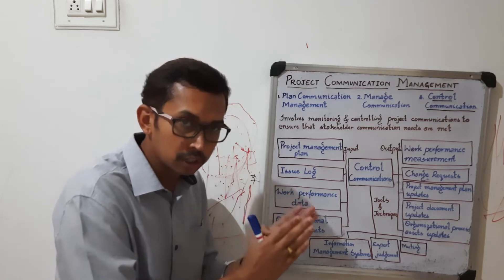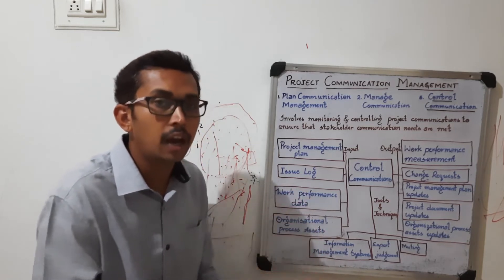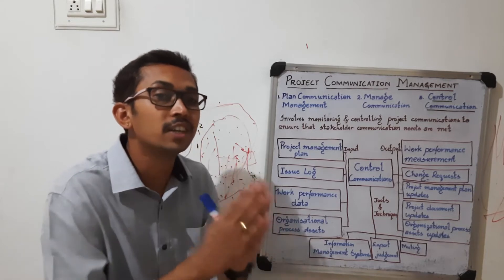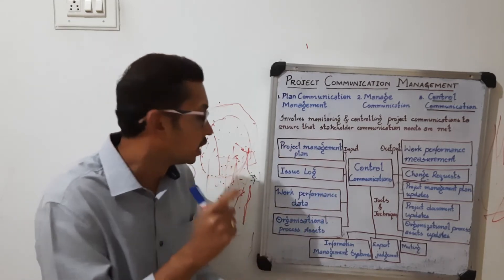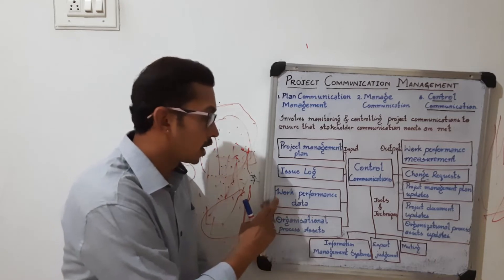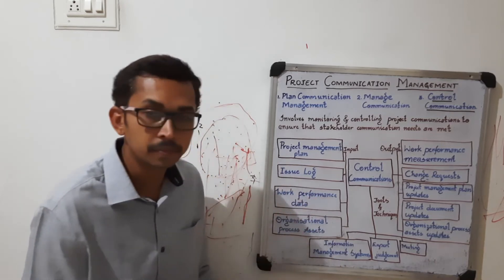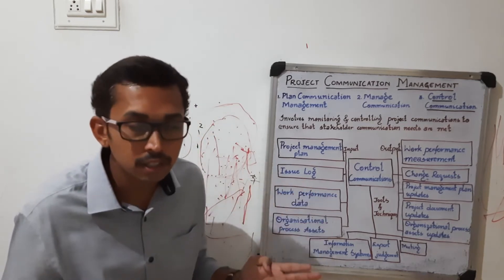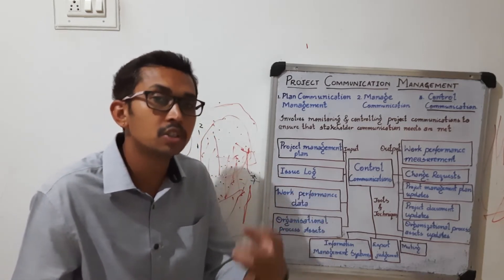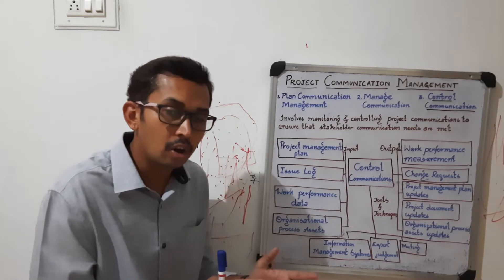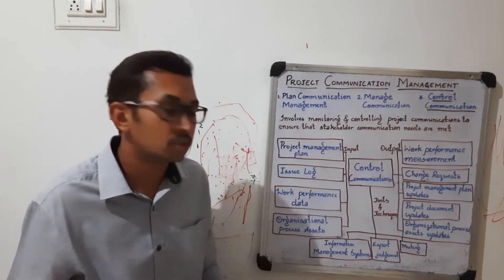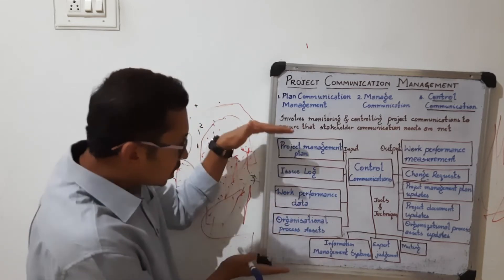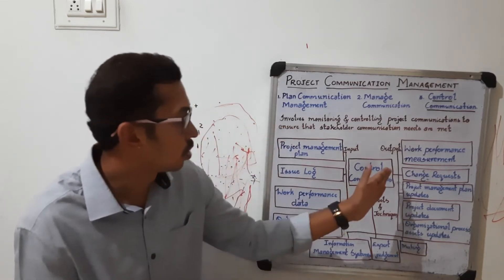Next is work performance data — this covers the progression of the project, how much cost is being incurred, and the performance and status of the project. After that, organizational process assets — already discussed — covers policies, procedures, and knowledge from previous past data. These four are the inputs for control communication.